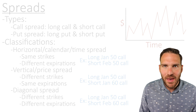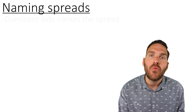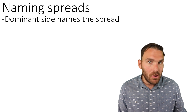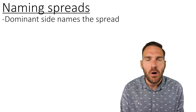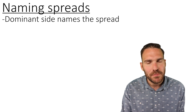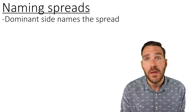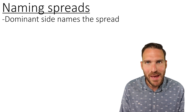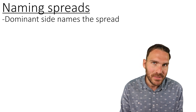Now that we have the classifications out of the way, let's talk about how one would name a spread. Naming a spread is always in reference to its dominant side. Every spread has two parts — a call spread has a long call and a short call; a put spread has a long put and a short put. One of those sides will always be considered the dominant side. The dominant side is the side the investor cares most about, typically because it's tied to them making money.